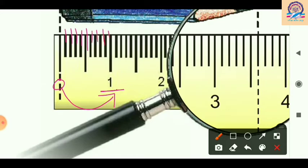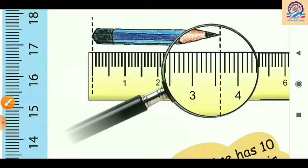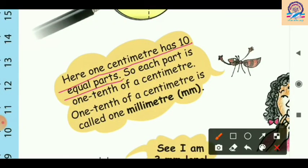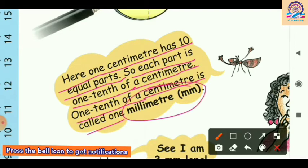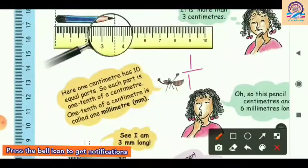Counting 1, 2, 3, 4, 5, 6, 7, 8, 9, 10 — so 10 small dots make 1 centimeter. We can write: 10 millimeters = 1 centimeter, or 1 centimeter = 10 millimeters. Therefore, 1 centimeter has 10 equal parts, and each part is 1/10 of a centimeter. That 1/10 of a centimeter is called 1 millimeter.